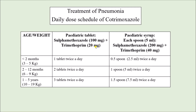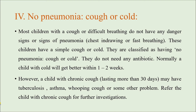Dosing of cotrimoxazole is based on age or body weight. For children less than two months or 3–5 kg: one tablet twice daily or 0.5 ml (half teaspoon) of syrup twice daily. For two to twelve months or 6–9 kg: two tablets twice daily or 5 ml (one teaspoon) twice daily. For one to five years or 10–19 kg: three tablets twice daily or 7.5 ml twice daily. This is the cotrimoxazole dosage in tablet or syrup form according to age group or body weight, and it is the treatment for pneumonia that is not severe.